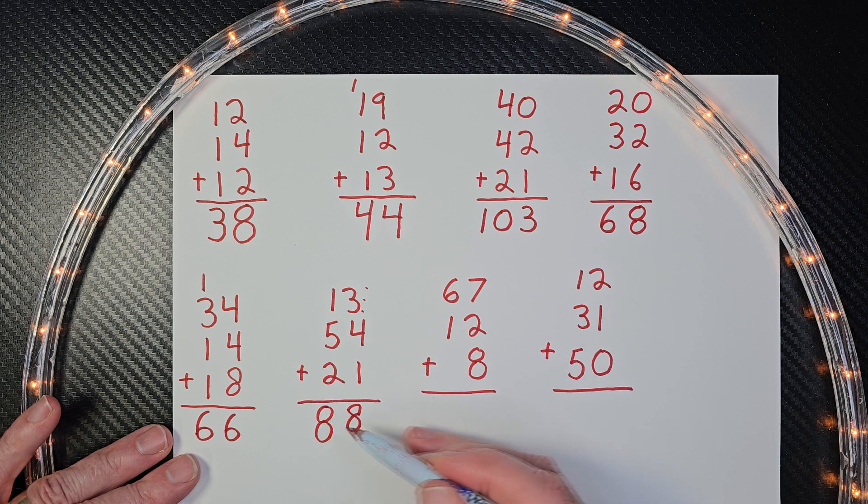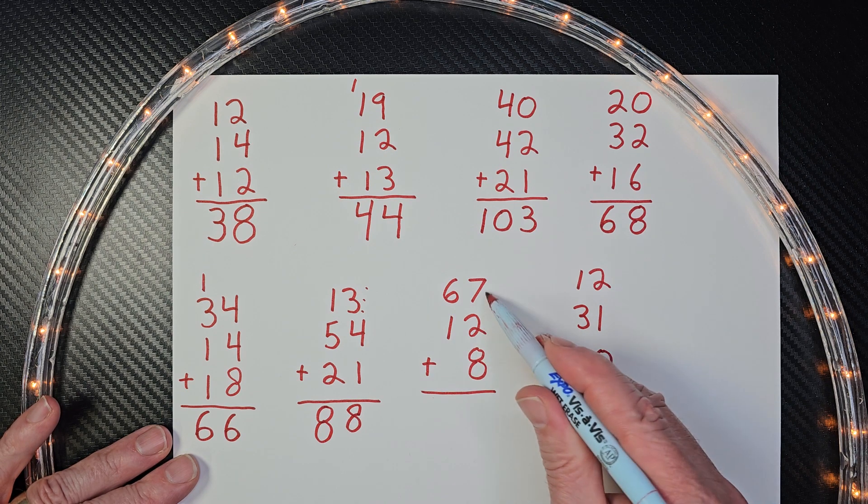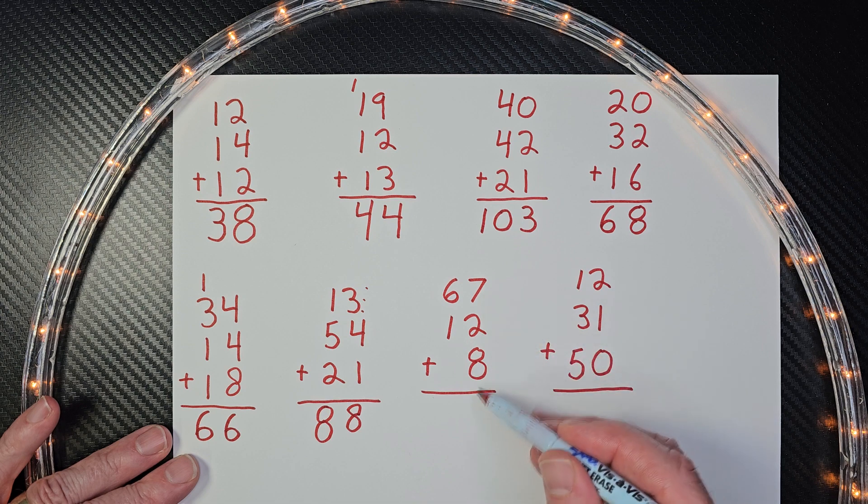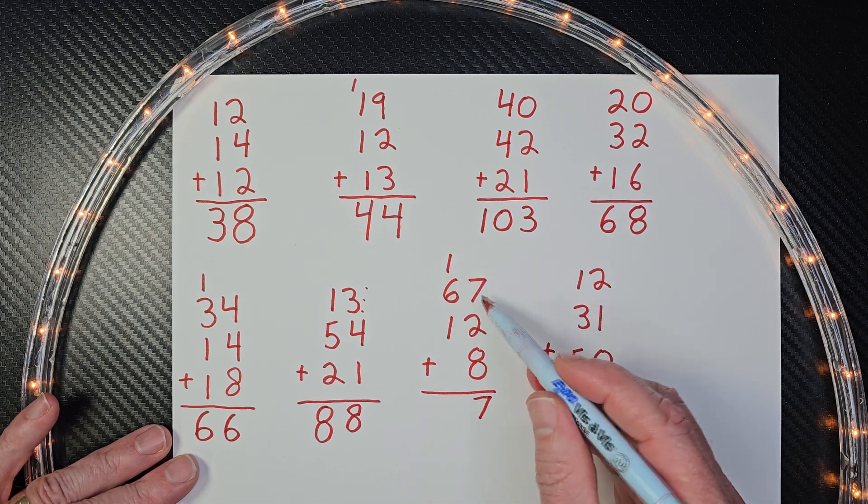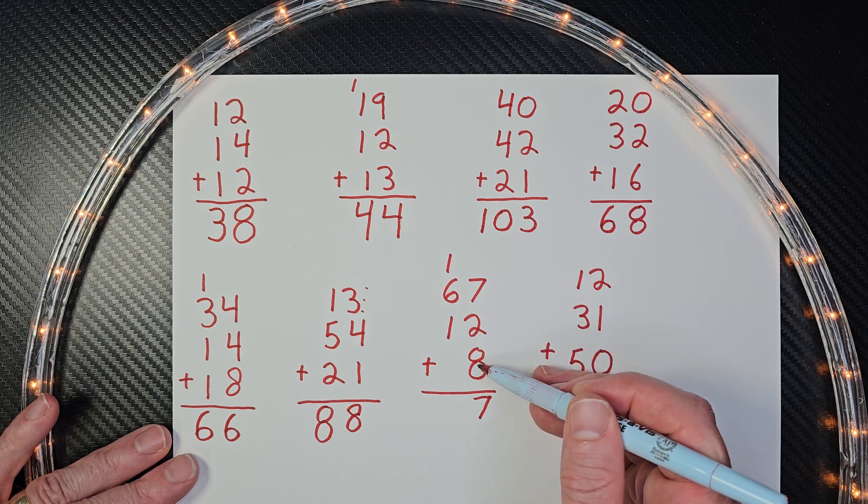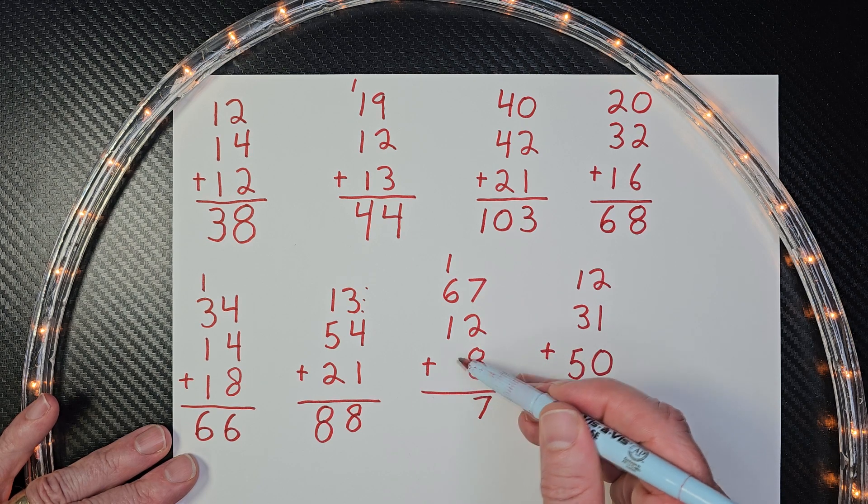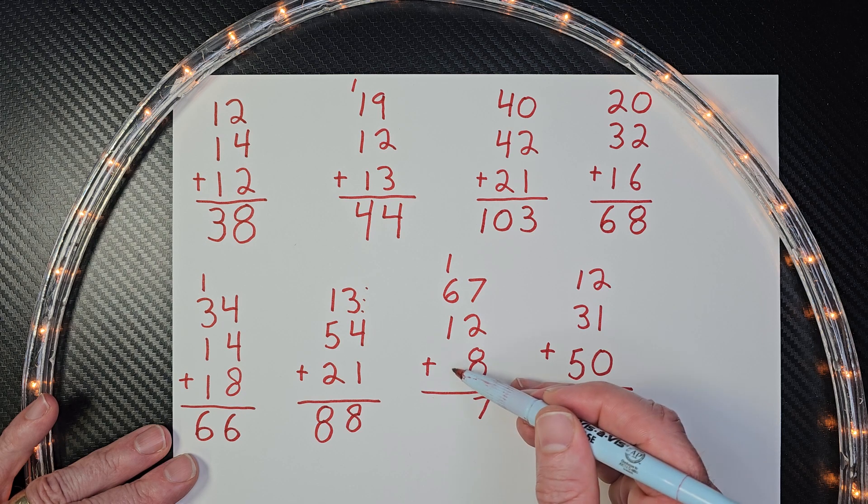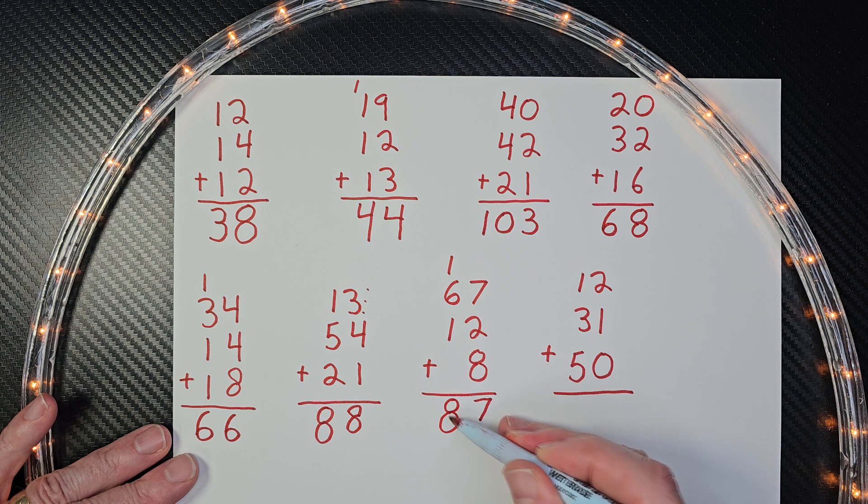All right. You guys are math pros, math ninjas. Eight plus two is 10. Ten plus seven is 17. Put the seven here. Carry the one. Now look at this. I have 67 plus 12 plus 8. Just eight. There's no number here in the tens. Don't worry about it. It's like a zero. Okay. Six, seven, eight. Eighty-seven.